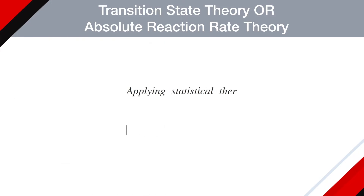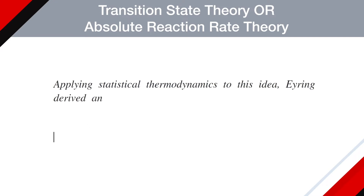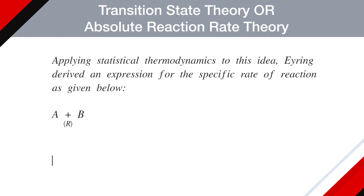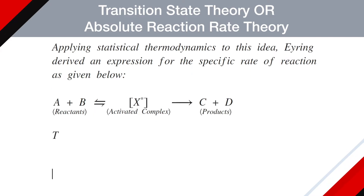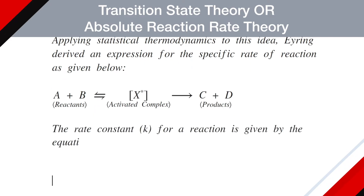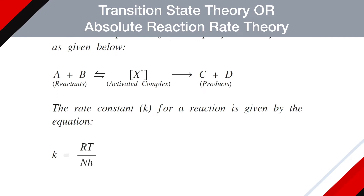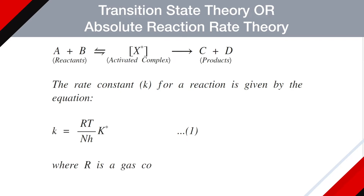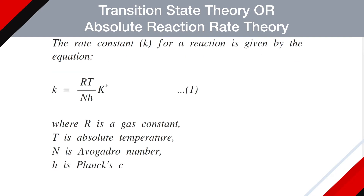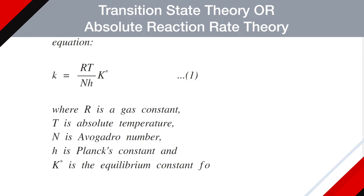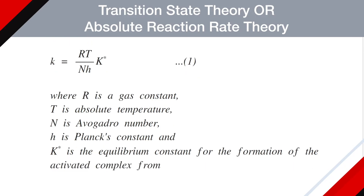Applying statistical thermodynamics to this idea, Eyring derived an expression for the specific rate of reaction. Reactant A combines with B producing activated complex X*, which decomposes to produce products C and D. The rate constant K for the reaction is given by: K = (RT / NH) × K*, where R is the gas constant, T is the absolute temperature, N is Avogadro's number, H is Planck's constant, and K* is the equilibrium constant for the formation of the activated complex from the reactants. This is Equation 1.